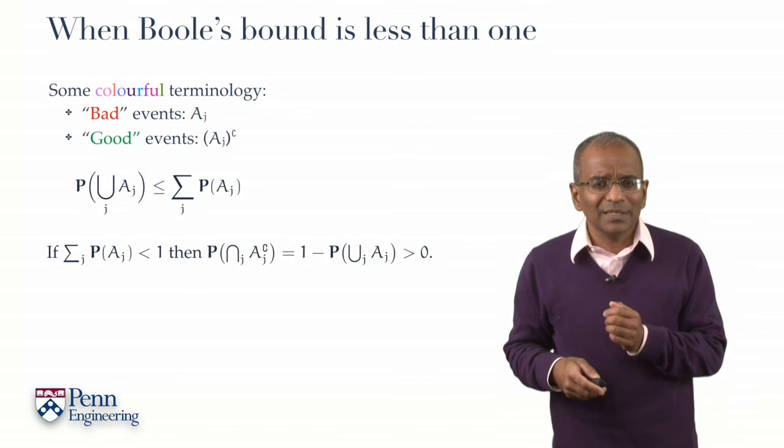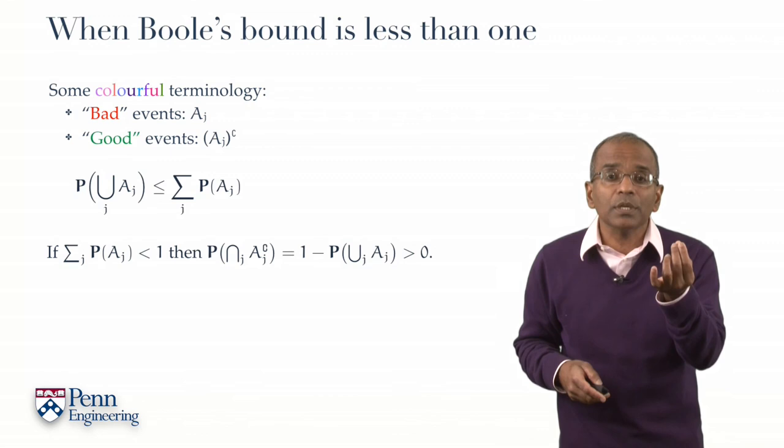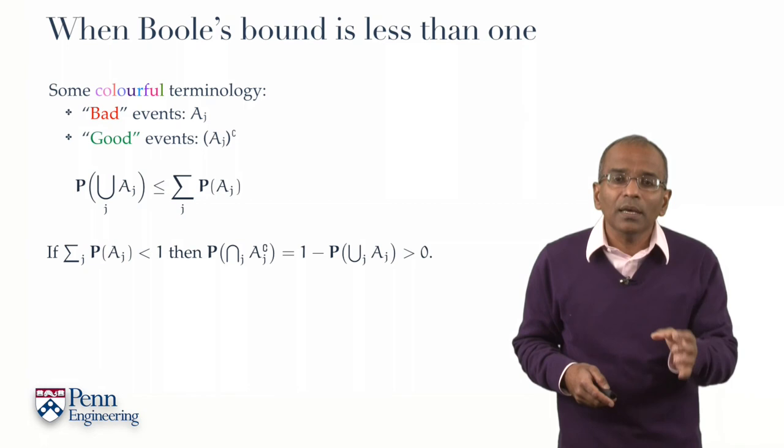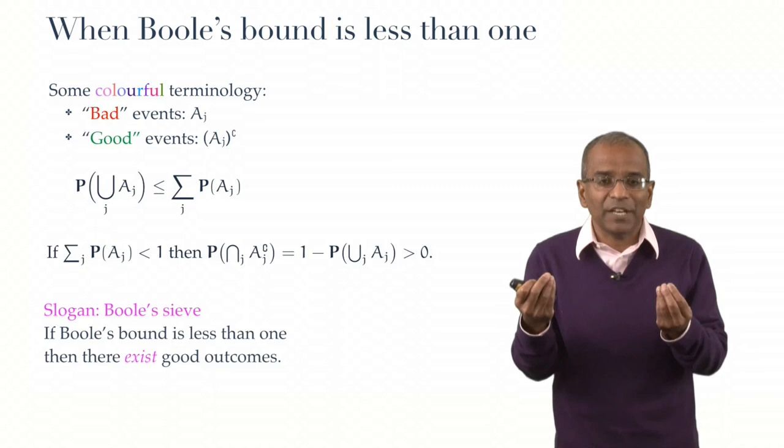What does that buy us? It tells us that somewhere in the space of outcomes, there is at least one outcome for this idealized chance experiment for which none of the bad events will occur. This is telling us something about the existence of good outcomes.